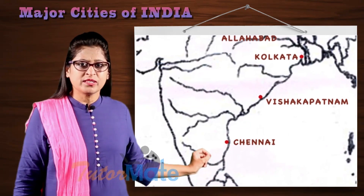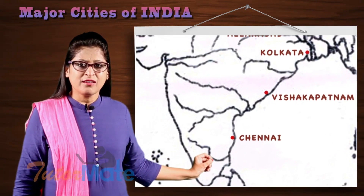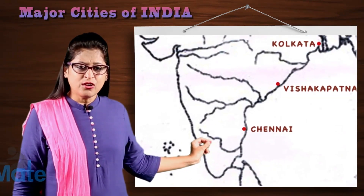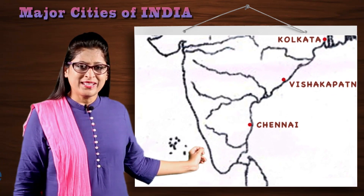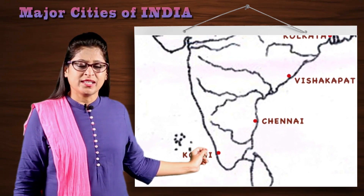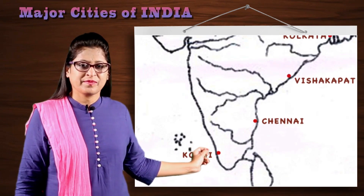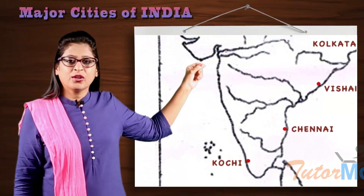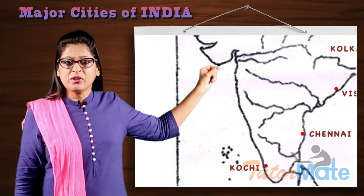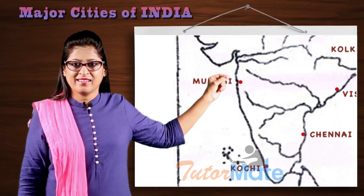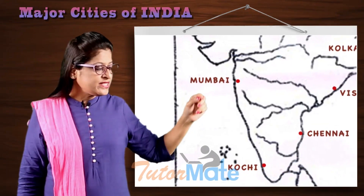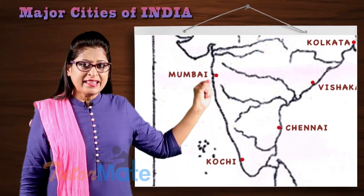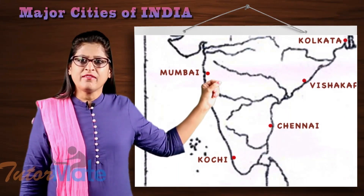Now when we come towards the west, we start from Kaveri — the end of Kaveri on the western coast lies Kochi. From Kochi, when we move towards the north-west, you have your commercial city, that is Mumbai.